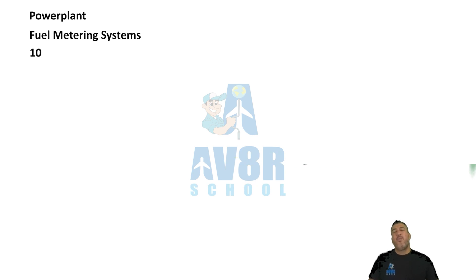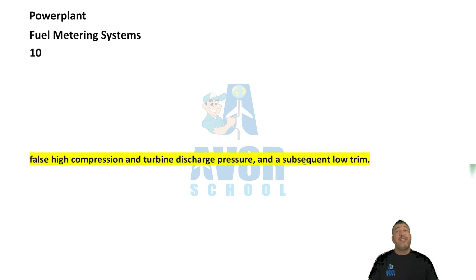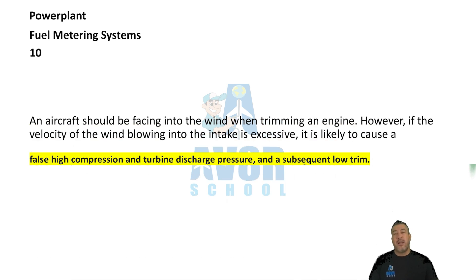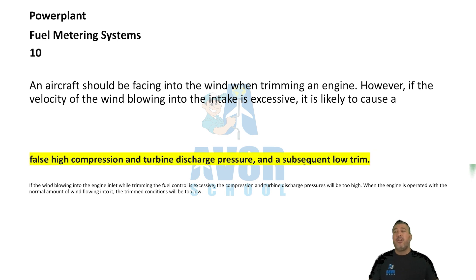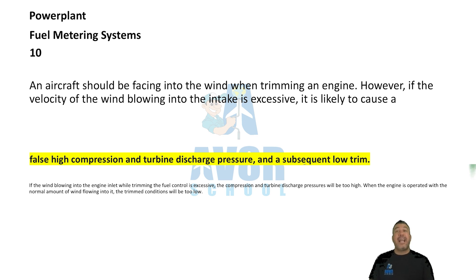Number ten: false high compression and turbine discharge pressure at a subsequent low trim. An aircraft should be facing into the wind when trimming an engine. However, if the velocity of the wind blowing into the intake is excessive, it is likely to cause a false high compression and turbine discharge pressure and a subsequent low trim.